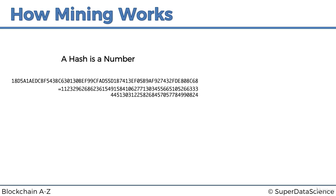We can take the same decimal number and convert it to hexadecimal, or even to a base-57 system if we wish — but the commonly used ones are decimal, which we use in the real world; binary, which computers use; and hexadecimal, which is also used for some things — one of them being hash numbers.